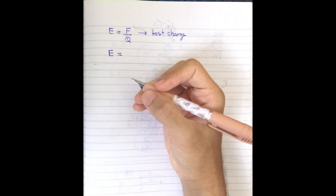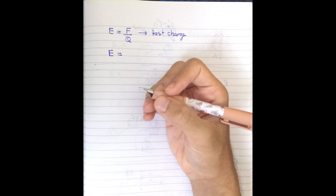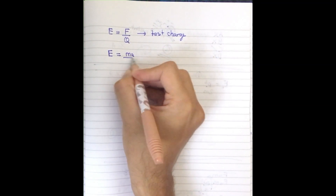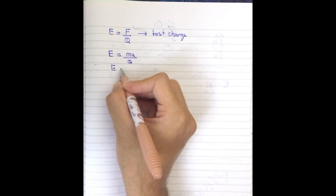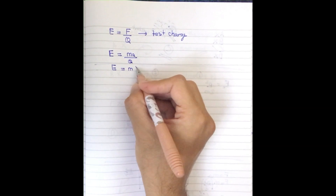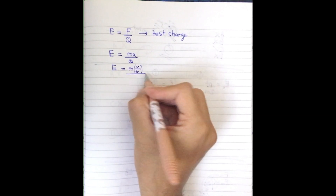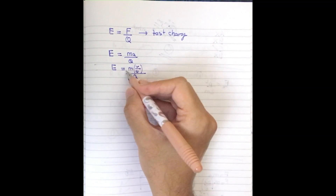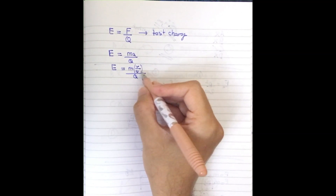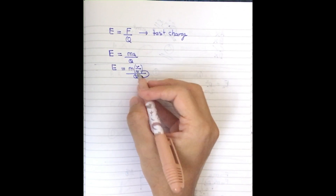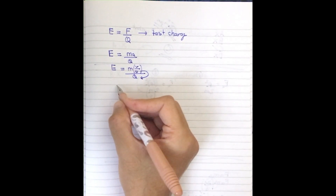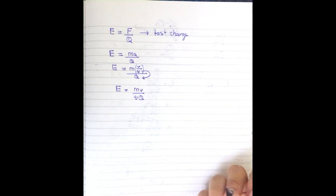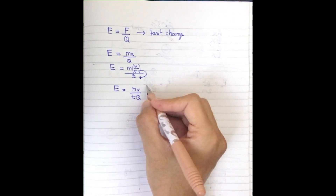I'm going to substitute the variables given by the question for both the proton and helium. So E equals F over q, which is ma over q. Then we can write acceleration as v over t, giving E equals m times v over t, all divided by q. Using the reciprocal rule, this simplifies to E equals mv divided by tq.